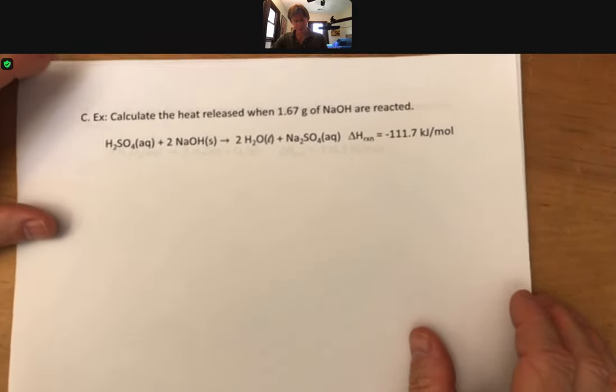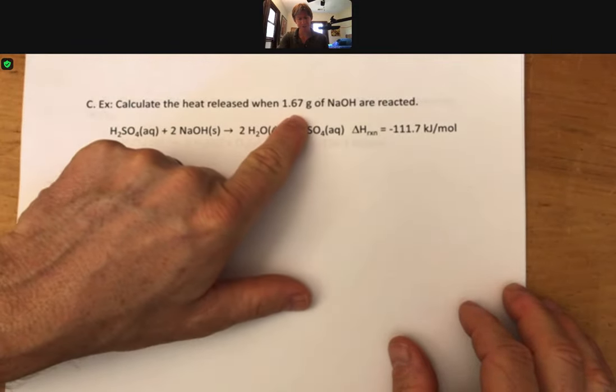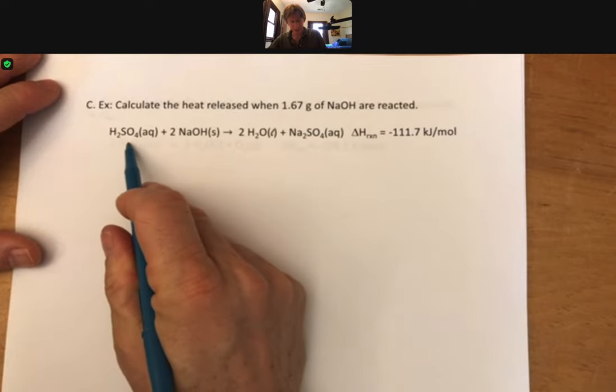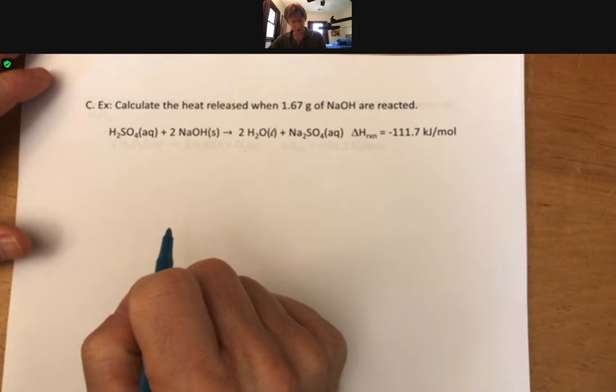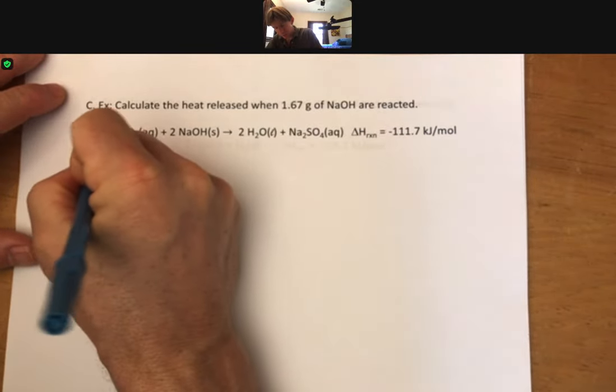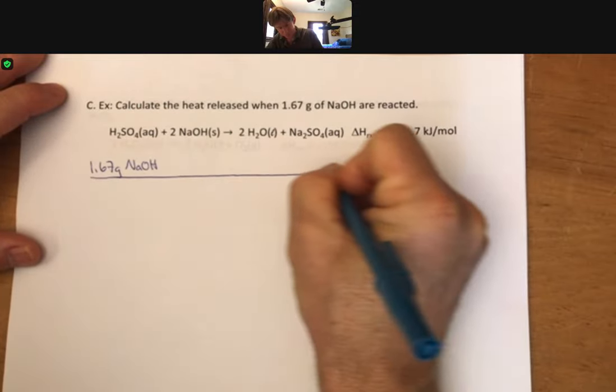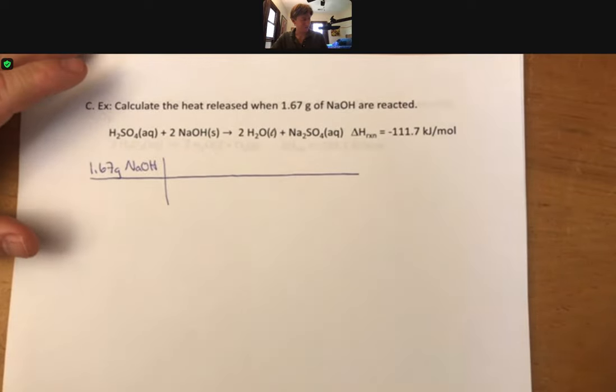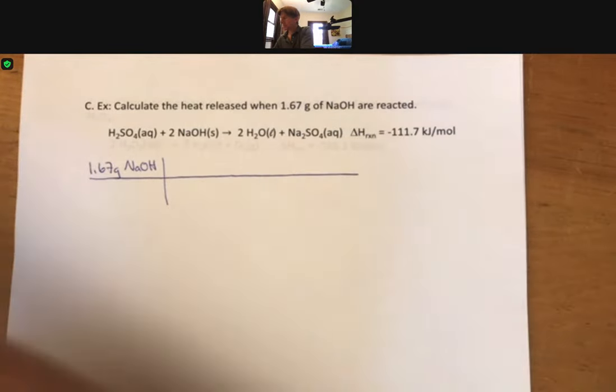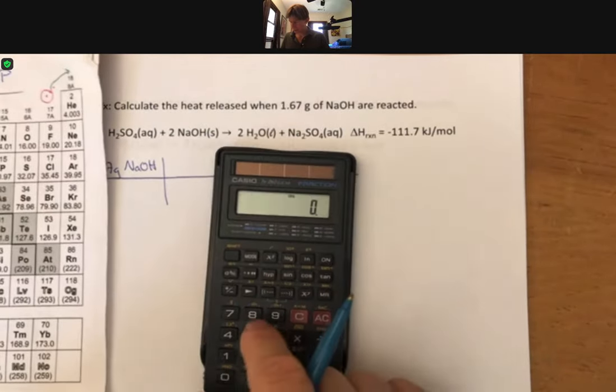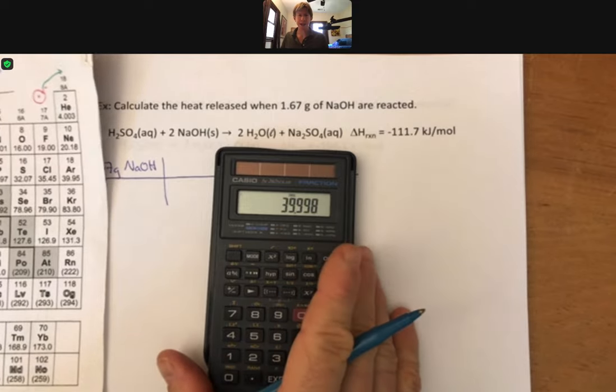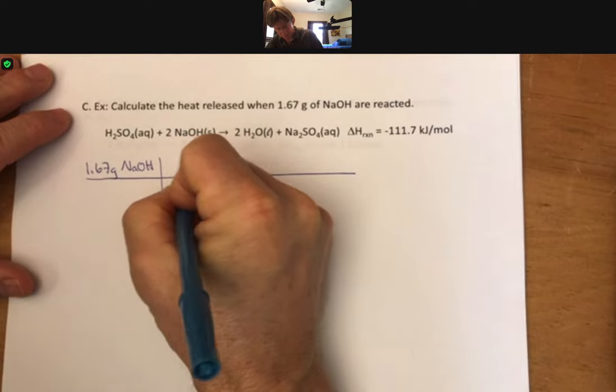Slightly different reaction, but same idea. It says calculate the heat released when 1.67 grams of sodium hydroxide are reacted. We've got an acid-base double replacement neutralization reaction going on here. I've given it to you completely balanced with the delta H value. Start with the number from the problem, grams of sodium hydroxide. I think I'm still only going to need two conversions here. Always convert grams into moles. For this sodium hydroxide, I've got 22.99 plus 1.008 plus 16, which I'll round to 40.00 grams.